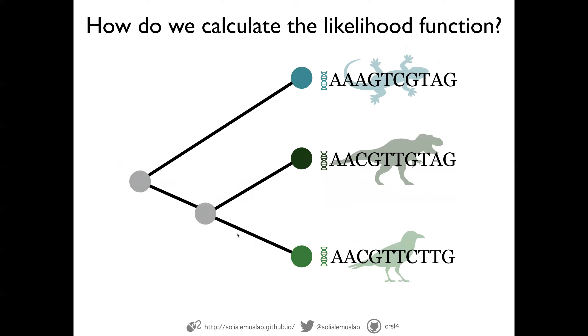But then the question becomes, how do we calculate the likelihood function? And the likelihood function we have to, instead of taking the whole sequence, we need to focus on one site or column at a time. We make the assumption that each column evolves independently from other columns.